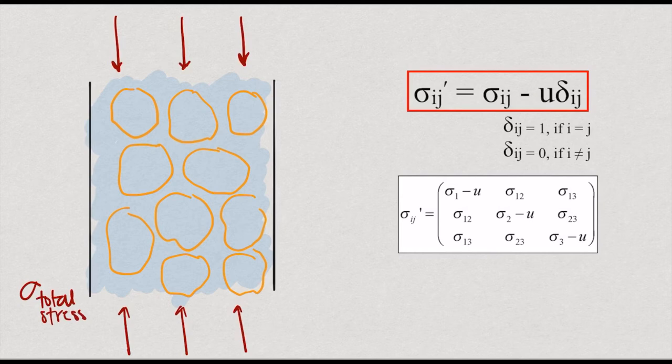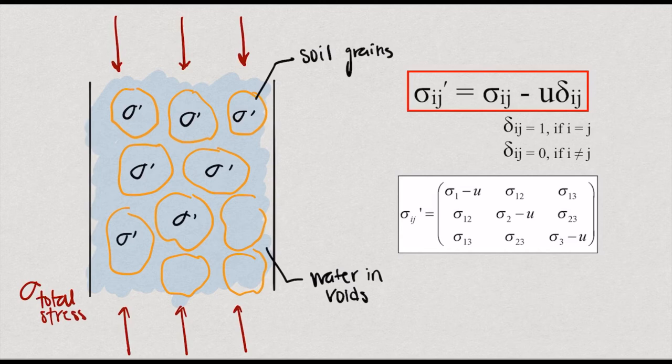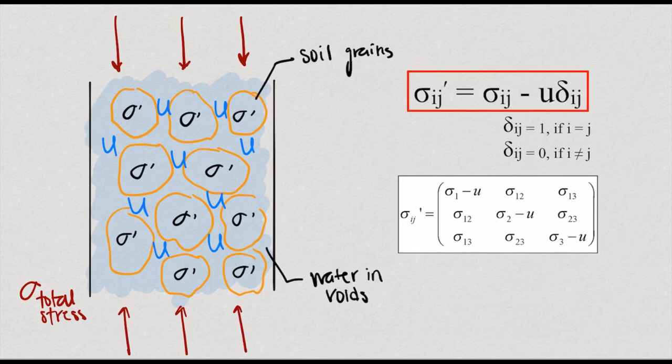In 1936, Terzaghi formulated the effective stress principle in the following terms. The stresses in any point of a section through a mass of soil can be computed from the total principal stresses which act in this point. If the voids of the soil are filled with water under a stress U, the total principal stresses consist of two parts.